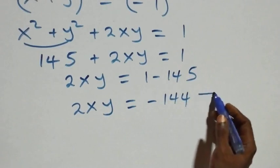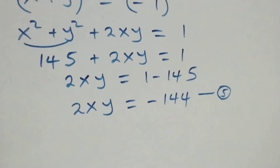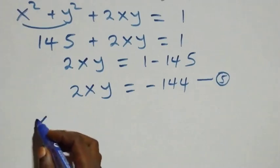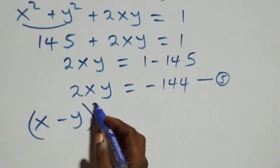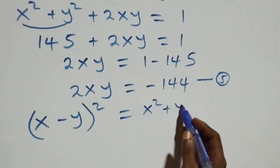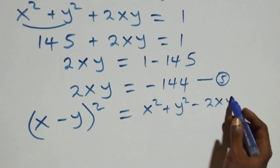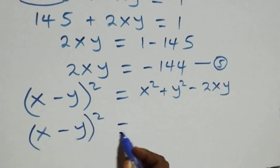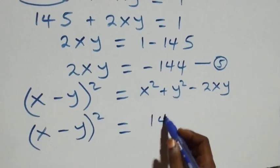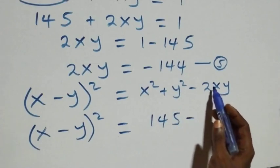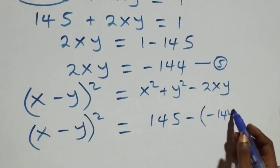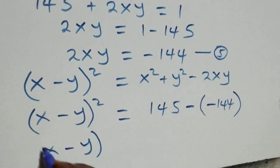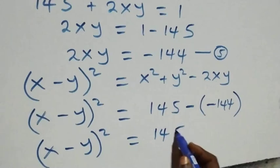Now to find x - y, we use the identity (x - y)² = x² + y² - 2xy. Substituting from equation four, x² + y² = 145, and from equation five, 2xy = -144: (x - y)² = 145 - (-144) = 145 + 144 = 289.